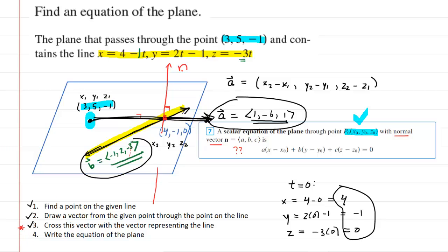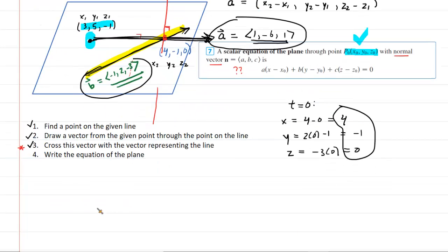Really step three is the most important here. And so we're going to go and we're going to cross them. So this is a whole little problem in and of itself. So let's just rewrite the vectors. We have vector a is one, negative six, and one. And then vector b is equal to negative one, two, and negative three. And again, we're going to find the cross product. Let's take a look at that.